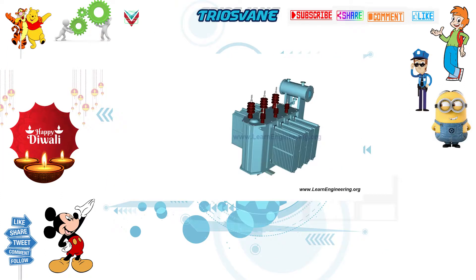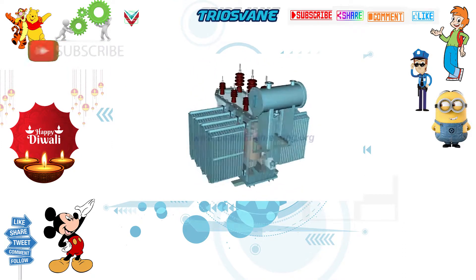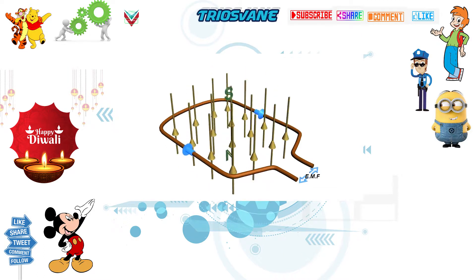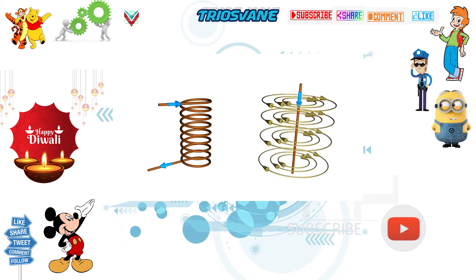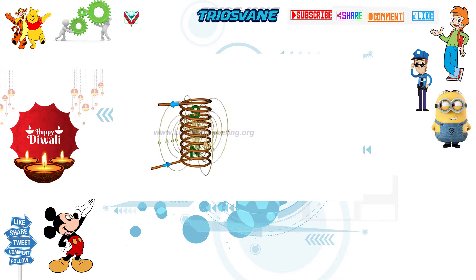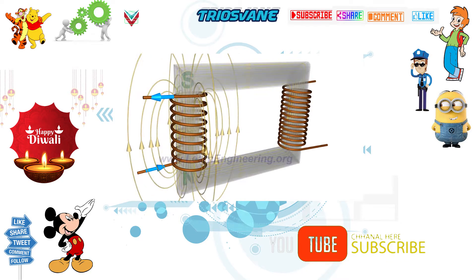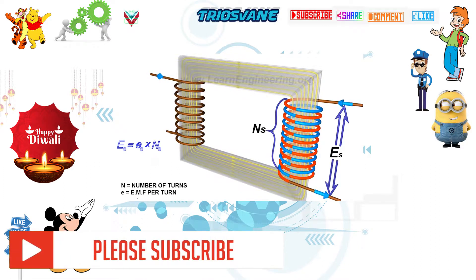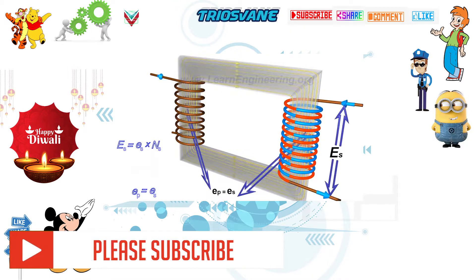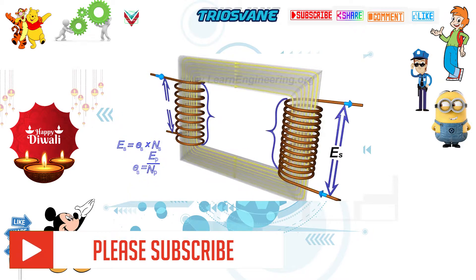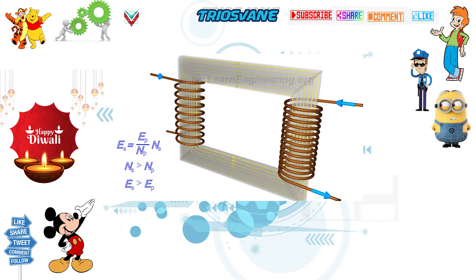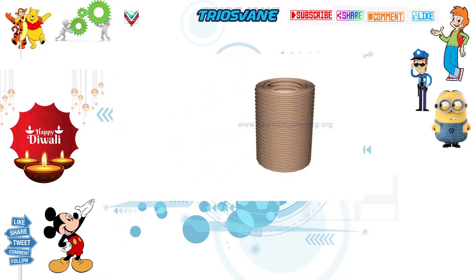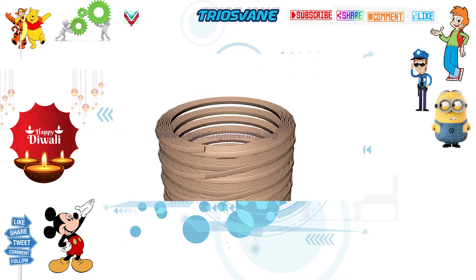A transformer is a device that transforms voltage from one level to another. Transformer working is based on mutual EMF induction between two coils which are magnetically coupled. When an AC voltage is applied to one winding, called the primary, it produces an alternating magnetic flux in the core made of magnetic material, usually some form of steel. The flux is produced by a small magnetizing current flowing through the winding. Cold-rolled grain-oriented, or CRGO, steel is used as the core material to produce a low-reluctance, low-loss flux path. The steel is in the form of varnished laminations to reduce eddy current flow and losses.